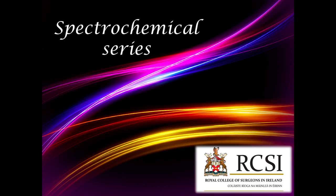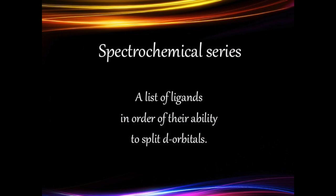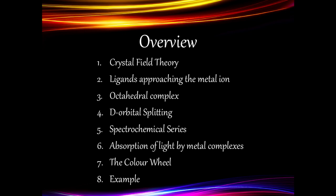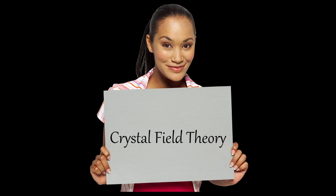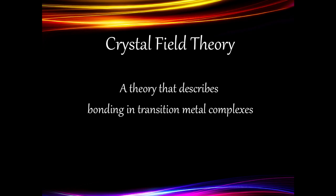In this video we are going to talk about the spectrochemical series. The spectrochemical series is a list of ligands arranged in order of their ability to split the orbital energies. In order to understand what this means, we are going to take a look first at the crystal field theory, which is simply a theory that describes the bonding taking place in transition metal complexes.